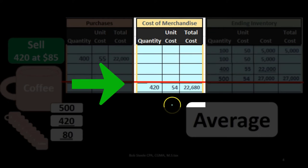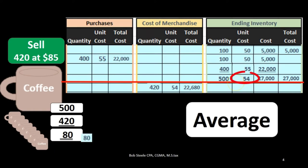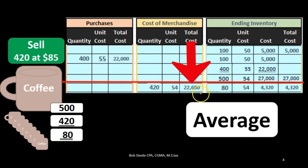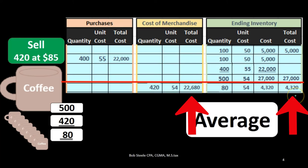So the cost of the goods sold is going to be that 54. In this case, all of them will be at that 54. What will be left over? We had 500 units. We sold 420. We're left with 80 units again at the average cost of 54, leaving us with 4,320 in ending inventory. This would be the cost of goods sold in this case that we sold. If we sold those 420 units, this would be the dollar amount that would be left over in ending inventory.